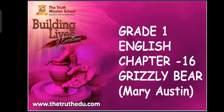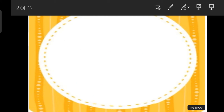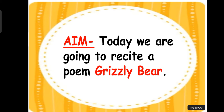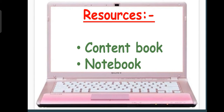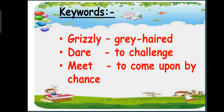I hope all of you have taken all the things with you. Now, firstly we talk about our today's aim. Our today's aim is to recite our poem, Grizzly Bear. Next, resources — what we need: we have our book, notebook, pencil box. Now we discuss about the keywords. Keywords are a very important part of our chapter. It is the most important part and we can't skip these keywords.